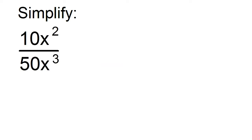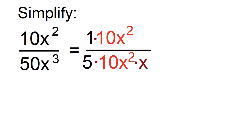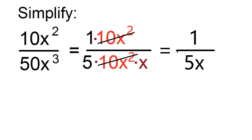Simplify 10x squared over 50x cubed. 10 can be factored as 1 times 10, and 50 can be factored as 5 times 10. x squared can be factored as 1 times x squared, and x cubed can be factored as x squared times x. Remember that x is understood to have 1 as its exponent. Divide out common factors. The answer is 1 over 5x.